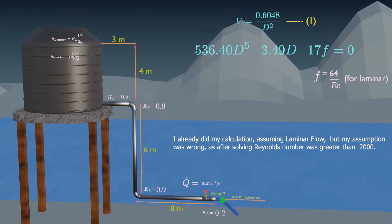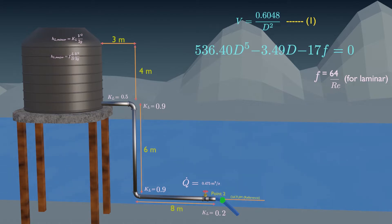But for this case, our assumption of laminar flow will be wrong. Because after solving and getting the velocity and diameter, calculate Reynolds number, it will be greater than 2,000. Which proved that laminar flow is wrong so it is turbulent flow.